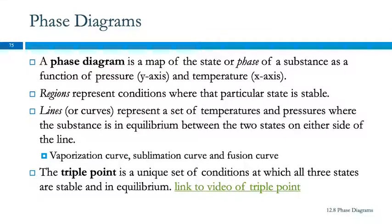A phase diagram is a map of the phase, or state of a substance, at different pressures and temperatures.